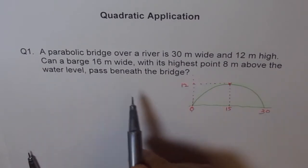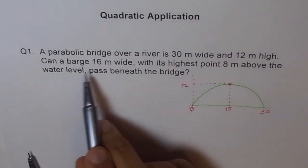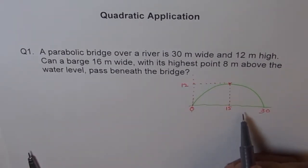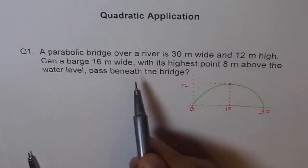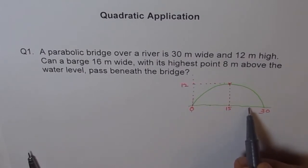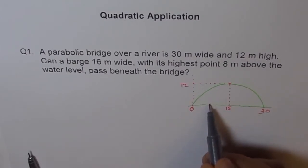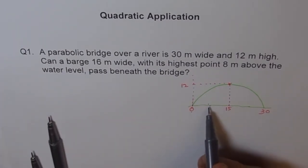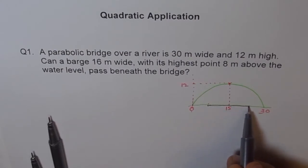Now, we have a barge. The best way for it to go through is right from the center. So from the center, it is 16 meters wide. That means if you try to keep it right in the center, then 8 on this side and 8 on this side. So that will be 16 meters wide.